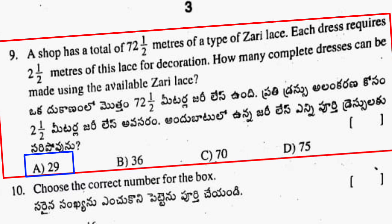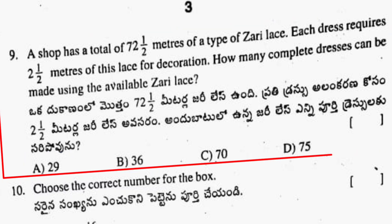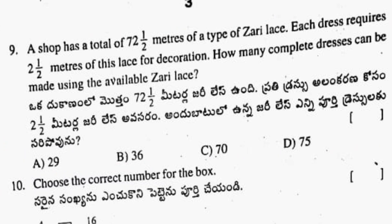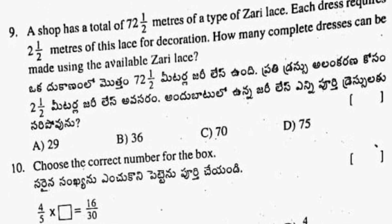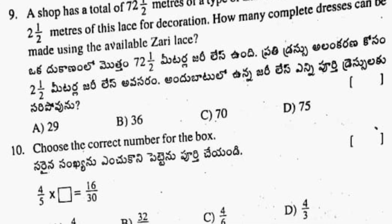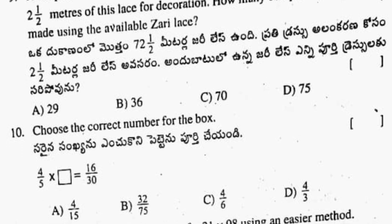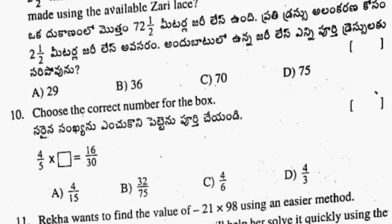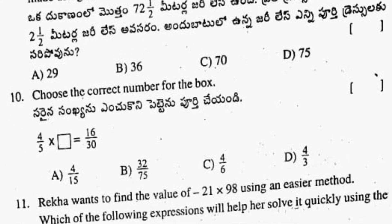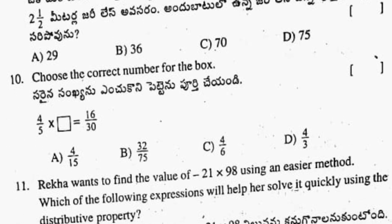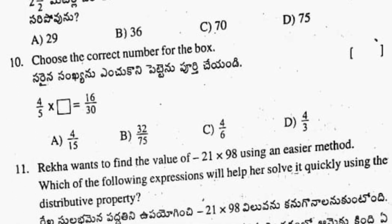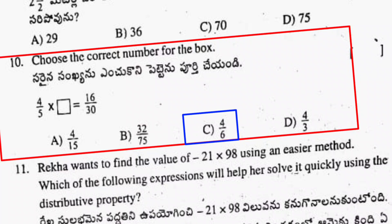Ninth question answer: option A, 29 is the correct answer. Next, tenth question: choose the correct number for the box. The answer for the tenth question is option C, 4 upon 6.